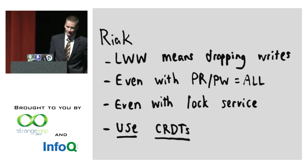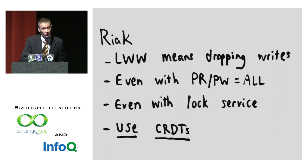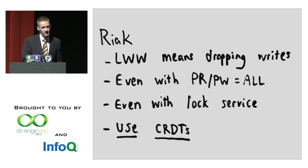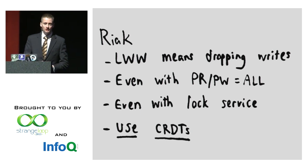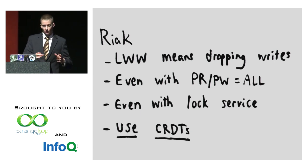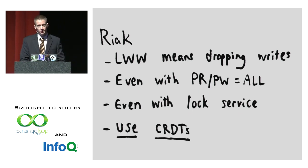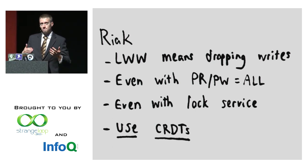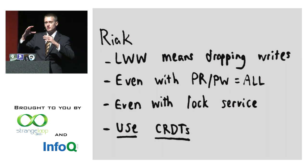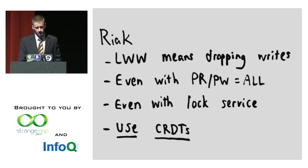Riak has another weak default: LastWriteWins essentially means you drop writes no matter what. Even using an external lock service, primary read, or primary write-all, there is no combination of consistency settings which can provide a safe way to write to Riak using LastWriteWins. The only cases where it's safe are where your data is immutable or it's safe to drop something given you have mostly the most recent copy. In short, you want to use CRDTs.